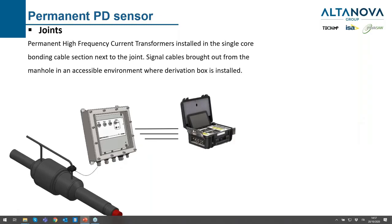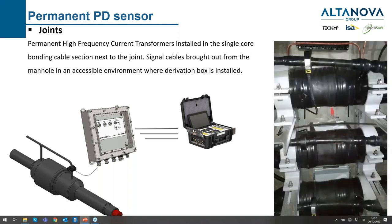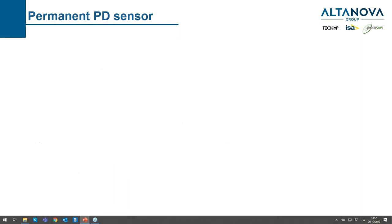In the joints, we can also install HFCTs. They should be installed on the single-core side of the bonding cable, next to the joint, and the signal can be brought outside with a dedicated box. This is one of our customers — you can see the HFCT installed in the single-conductor bonding cable.